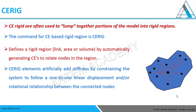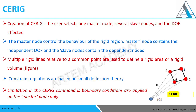CE-rigid artificially adds stiffness by constraining the system to follow one-to-one linear displacements. Whatever displacement the master node has, it will be equally distributed to all the slave nodes. The master node is connected to several slave nodes - there is no limit for the number of slave nodes, all connected to only a single master node. The master node acts independently while slave nodes act dependently. Here we can see the red-colored slave nodes - all four nodes have equal displacements according to the master node load application.